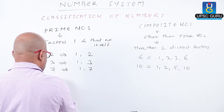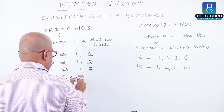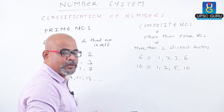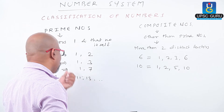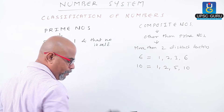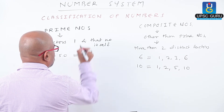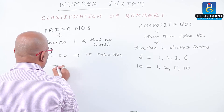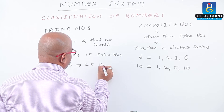If we check prime numbers, they are 2, 3, 5, 7, 11, 13, and so on. If we check factors of all these numbers, we get only 1 and that number itself as the factors. Between 1 to 50, there are total 15 prime numbers. And between 1 to 100, there are total 25 prime numbers.